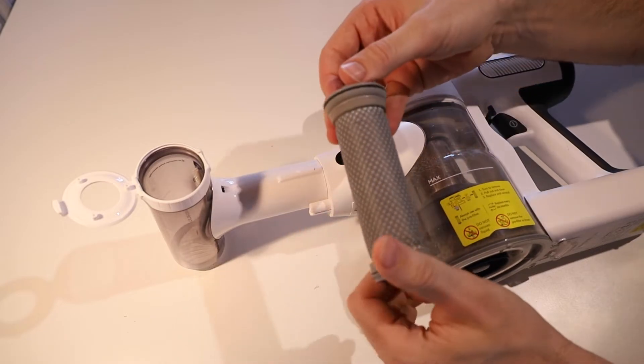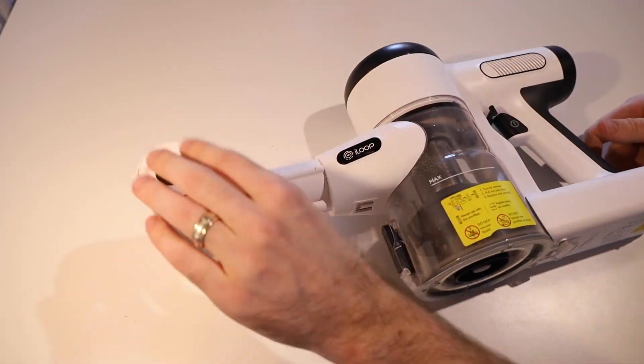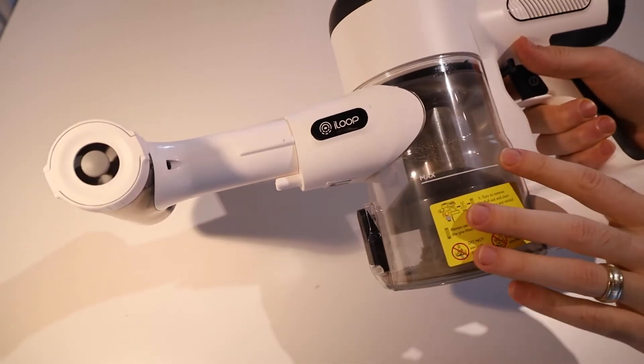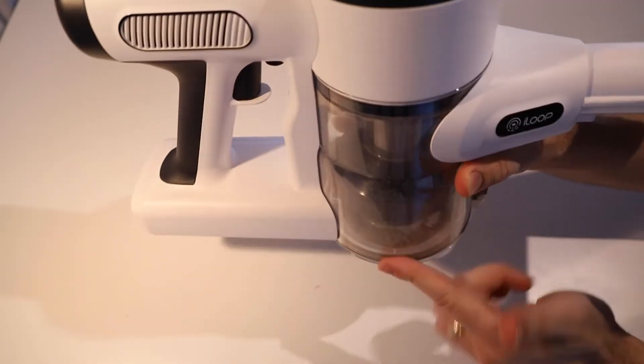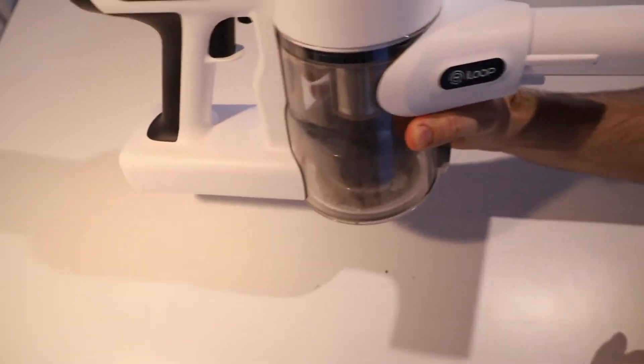So that is how the filter cleaning attachment works. And you might think it's all going to go straight into the pre-filter that we've just replaced here and it's just going to go backwards and forwards, but it is all here in the bottom of our vacuum dustbin and we can go ahead and empty that out.